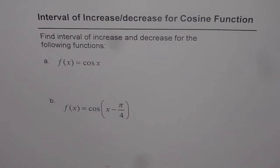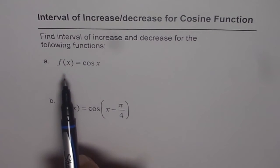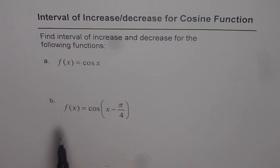Interval of increase and decrease for cosine function. The question is, find the interval of increase and decrease for the following functions. So part a and b, we have a cosine function. Here is f of x equals cos x and then we have a transformed cosine function, which is f of x equals cos of x minus pi by 4.